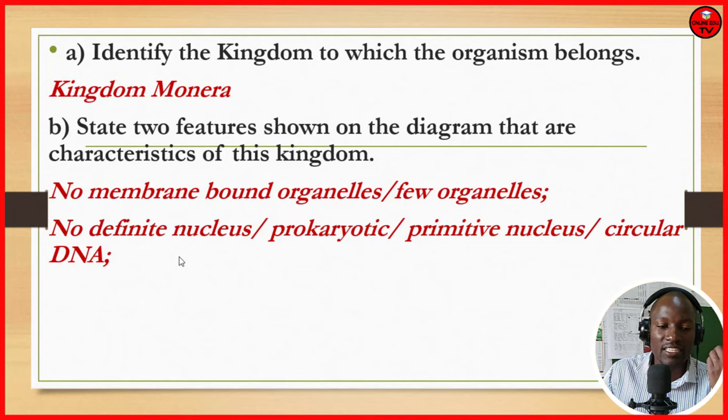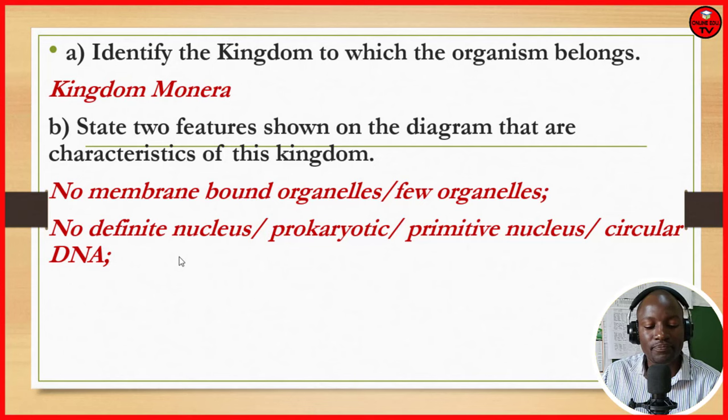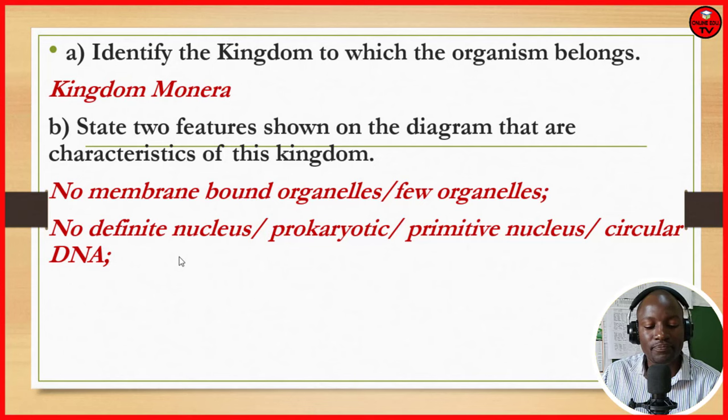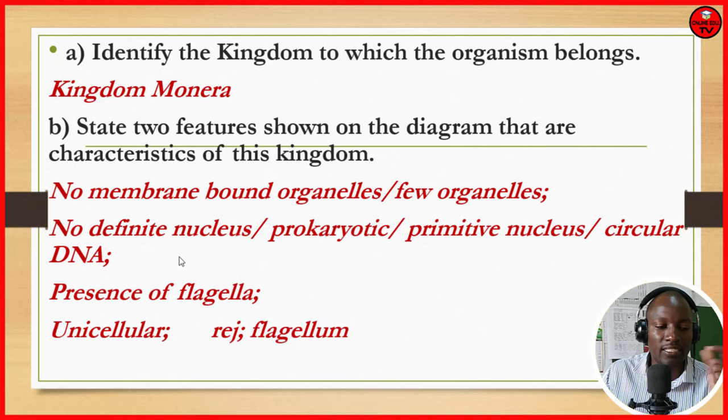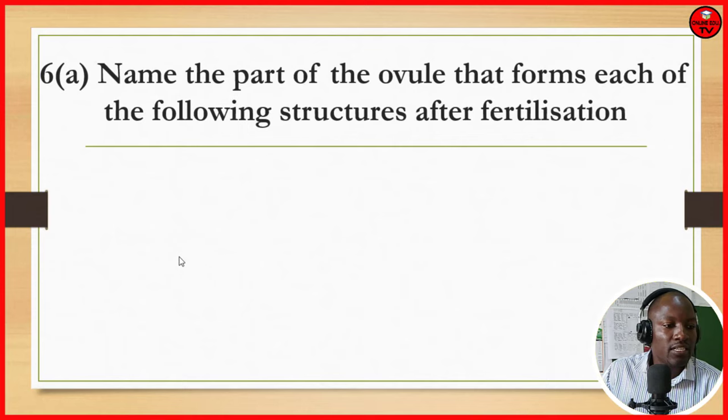They have a circular DNA. We can also see presence of flagella — you can see there are four of them. It is also unicellular, meaning it is a single cell. Note: we reject 'flagellum' because flagellum is the singular form, and since there are four visible, the correct term is 'flagella.' Plural and singular distinctions are very important.